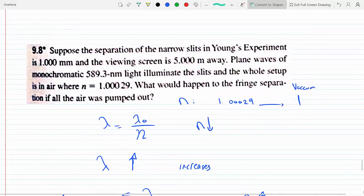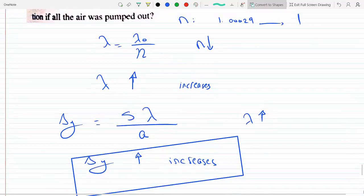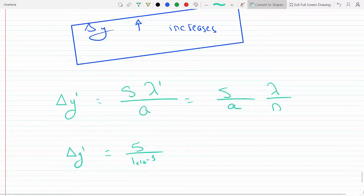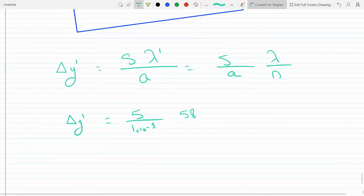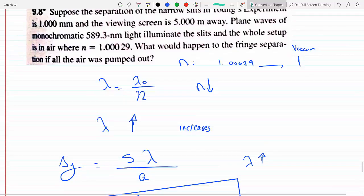The lambda is 589.3 nanometers. Change this to meters, multiplied by 10 to the minus 9, and then divide this by...